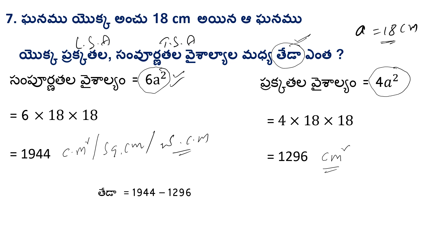The difference between TSA and LSA: subtract the smaller from the larger. 1944 − 1296 = 648. The answer is 648 square centimeters.